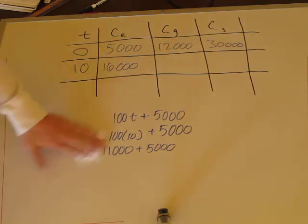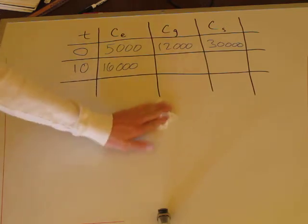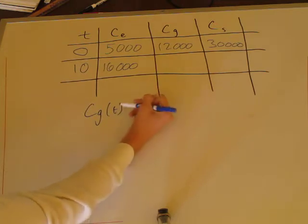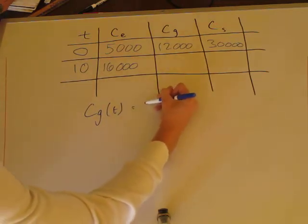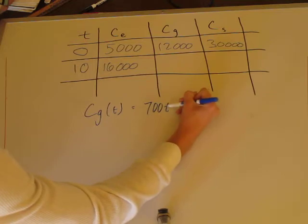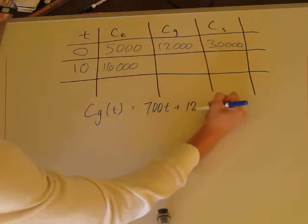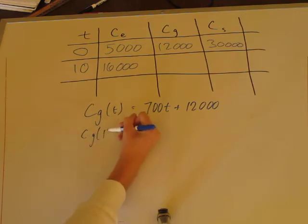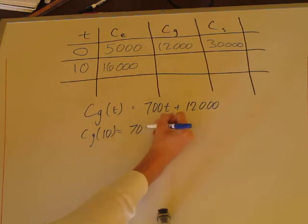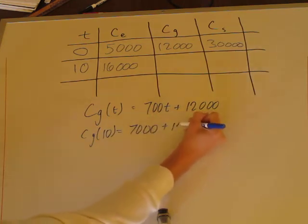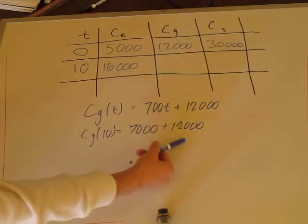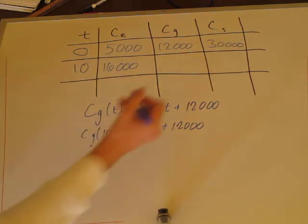Now for gas: Cg(t) = 700t + 12,000. After 10 years, that's 700 times 10, which is $7,000, plus the $12,000 initial cost. So $7,000 plus $12,000 equals $19,000 for the gas system after 10 years.